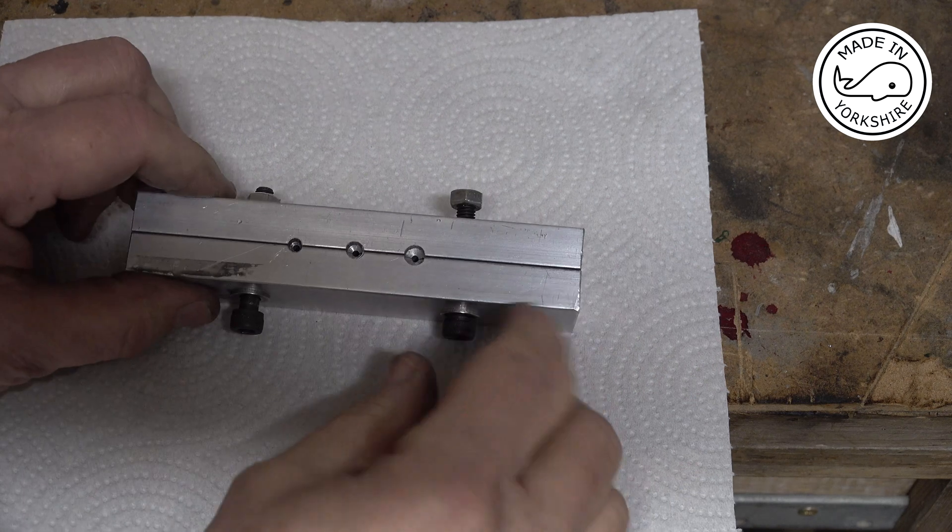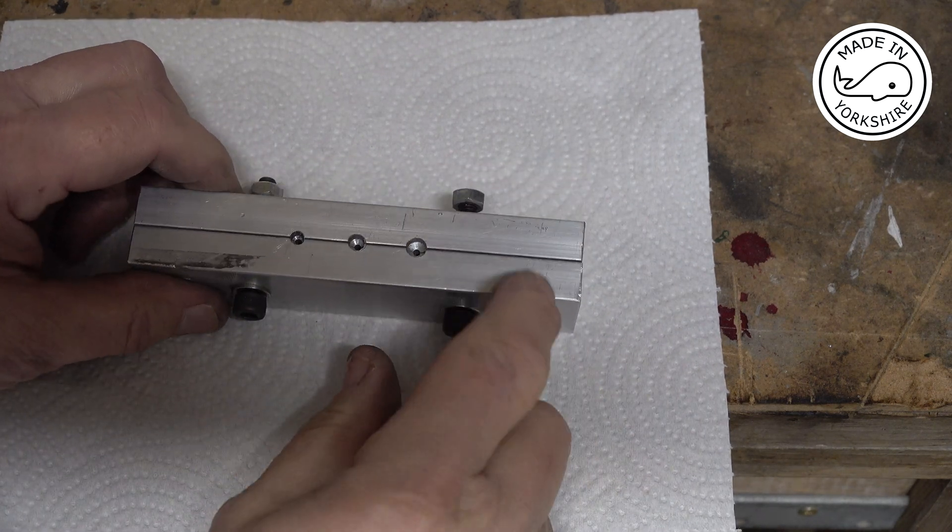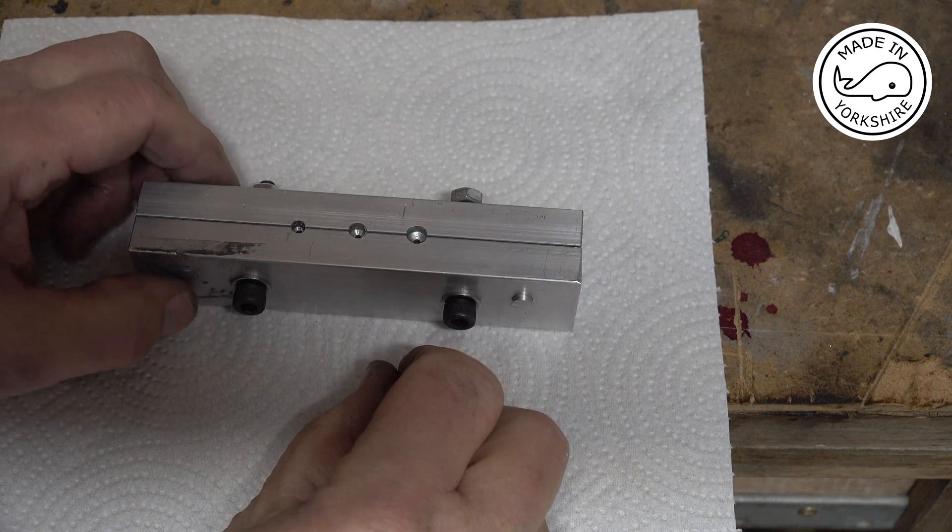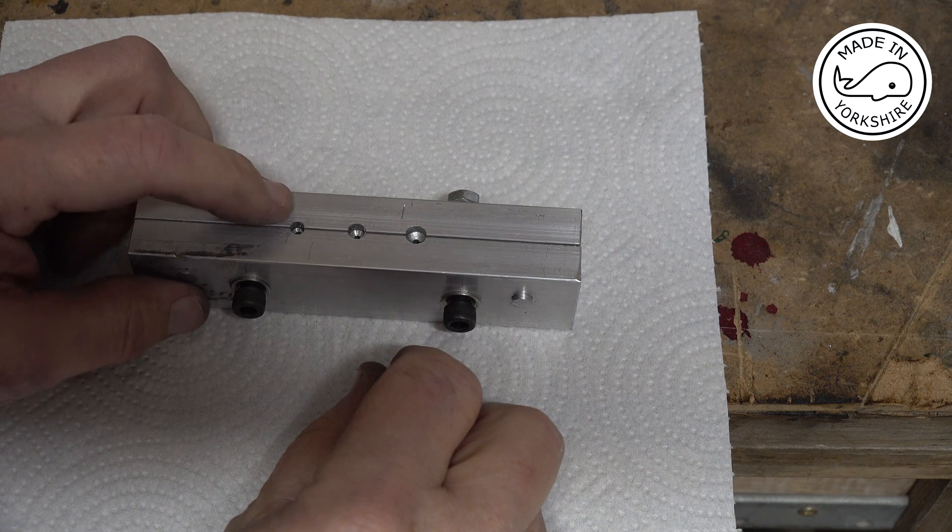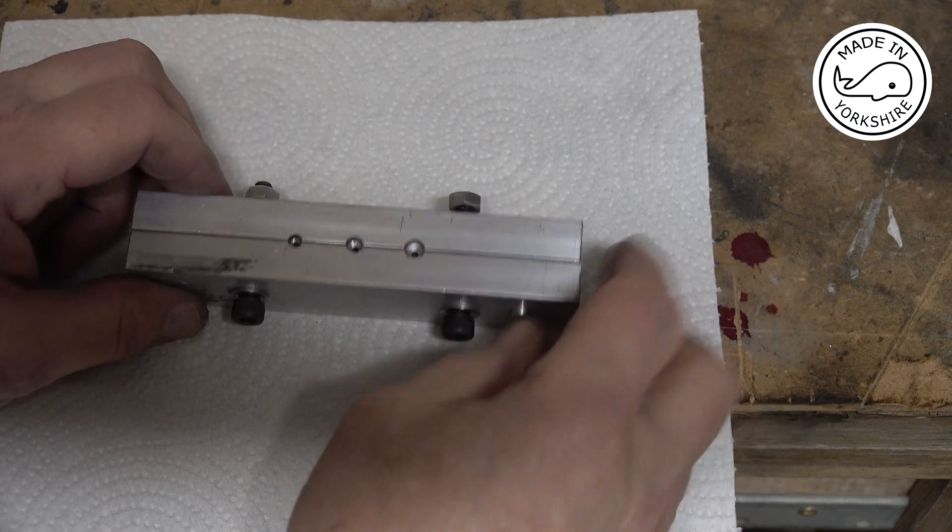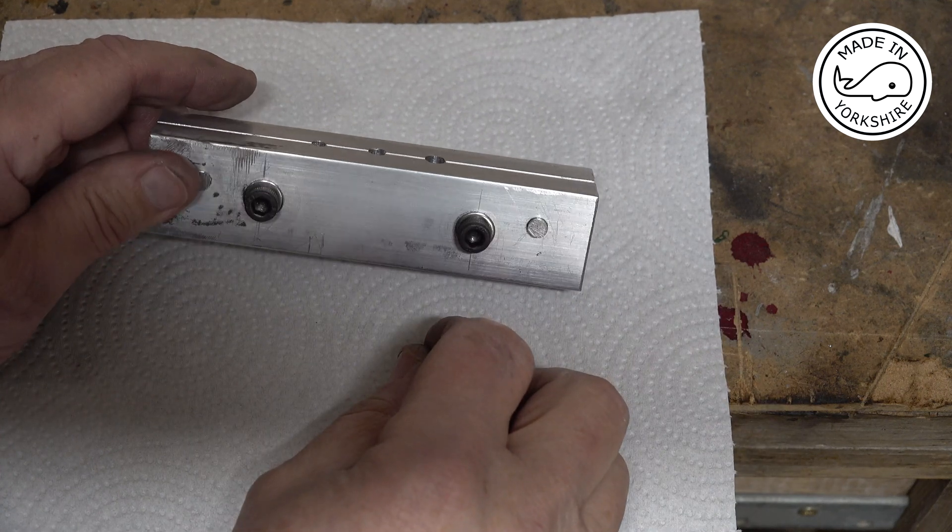So the tool itself is pretty straightforward, just a couple of pieces of metal, this is aluminium. For a longer life tool you're probably better off using some harder material. But what you do is you cut a couple of pieces to size, to length.